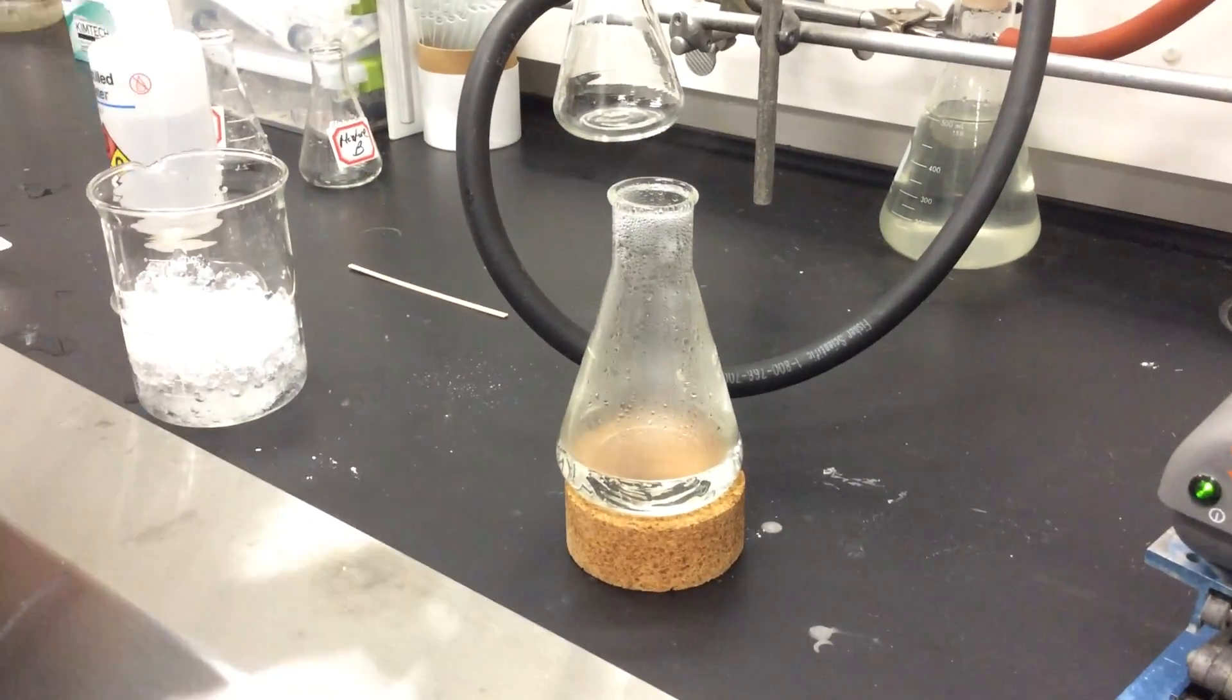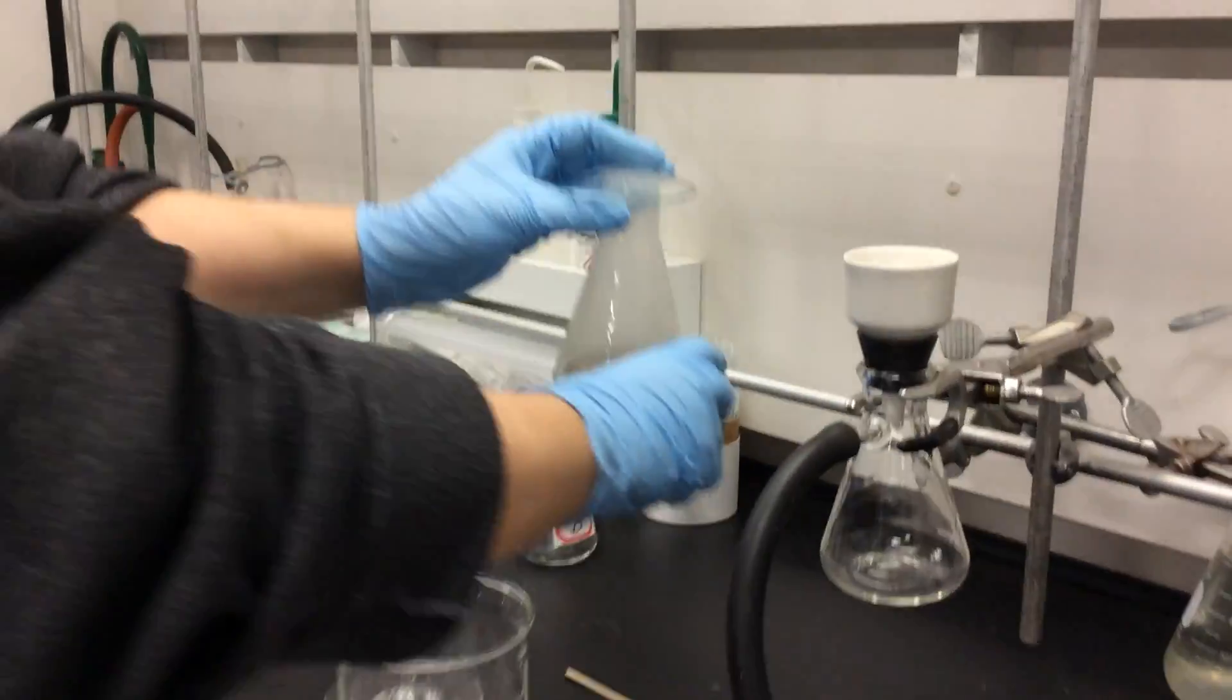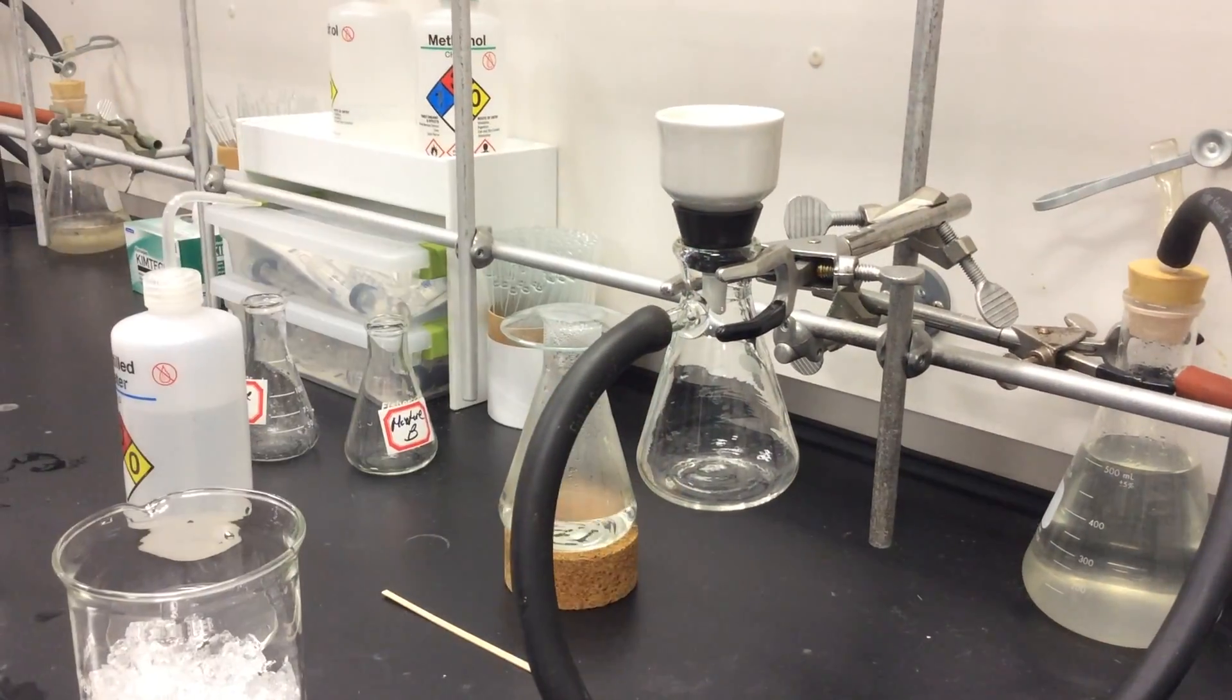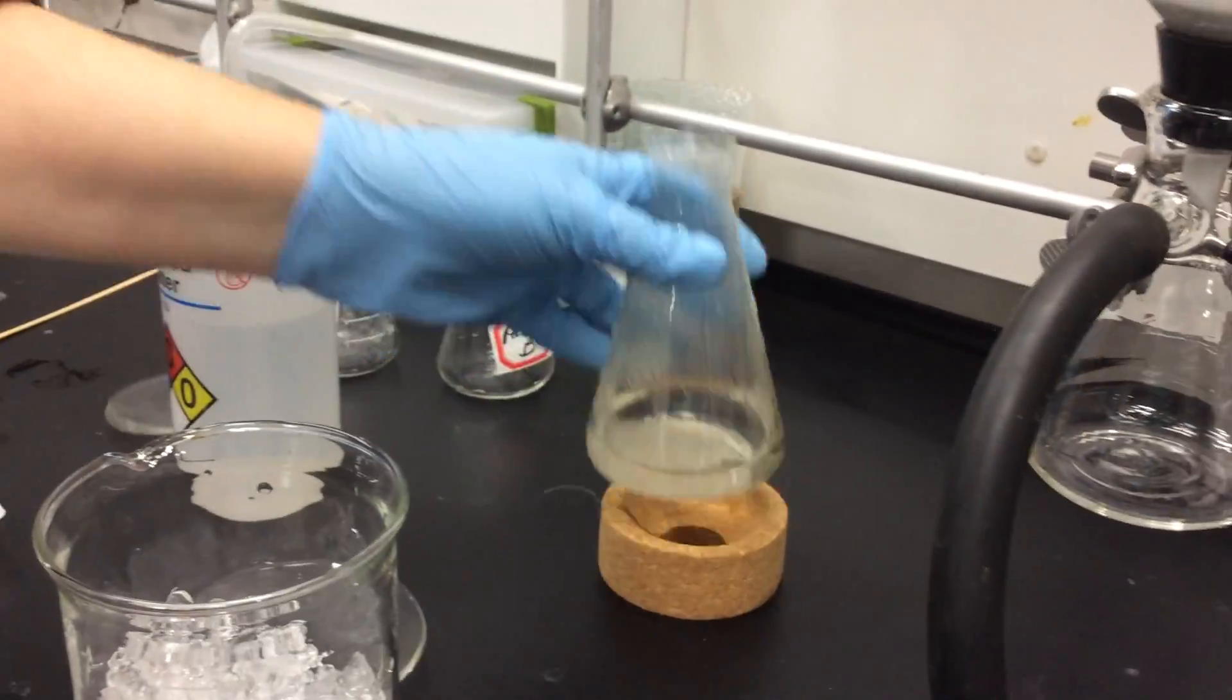Now what we're going to do is we're going to take a watch glass, cover the Erlenmeyer with the watch glass, set it at the back of the hood to cool. We use the watch glass to cover it so no impurities or dirt can fall in.